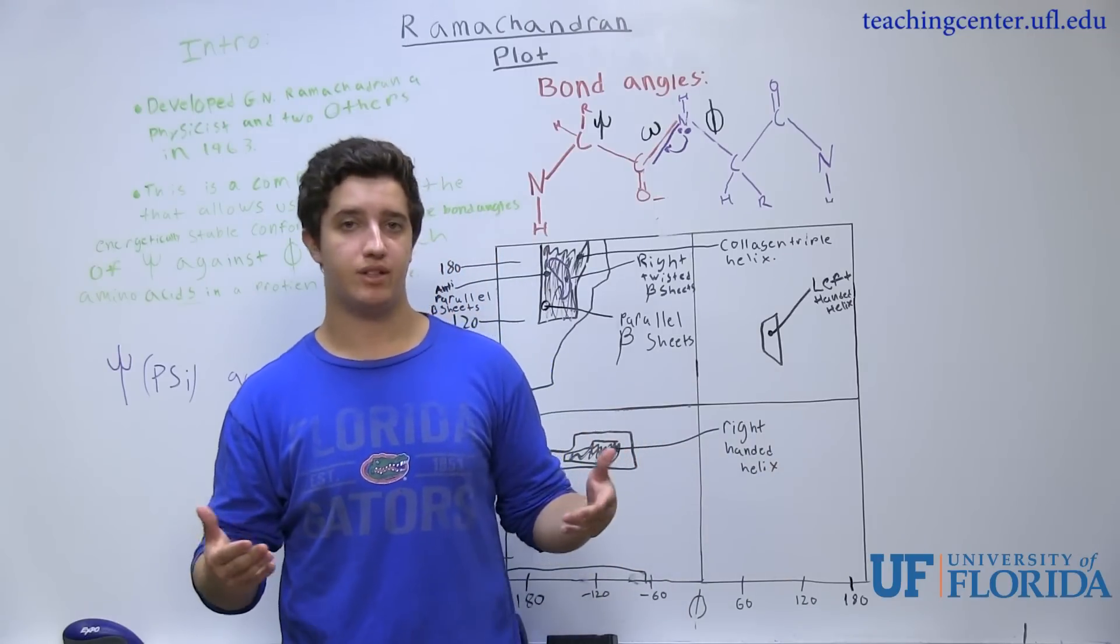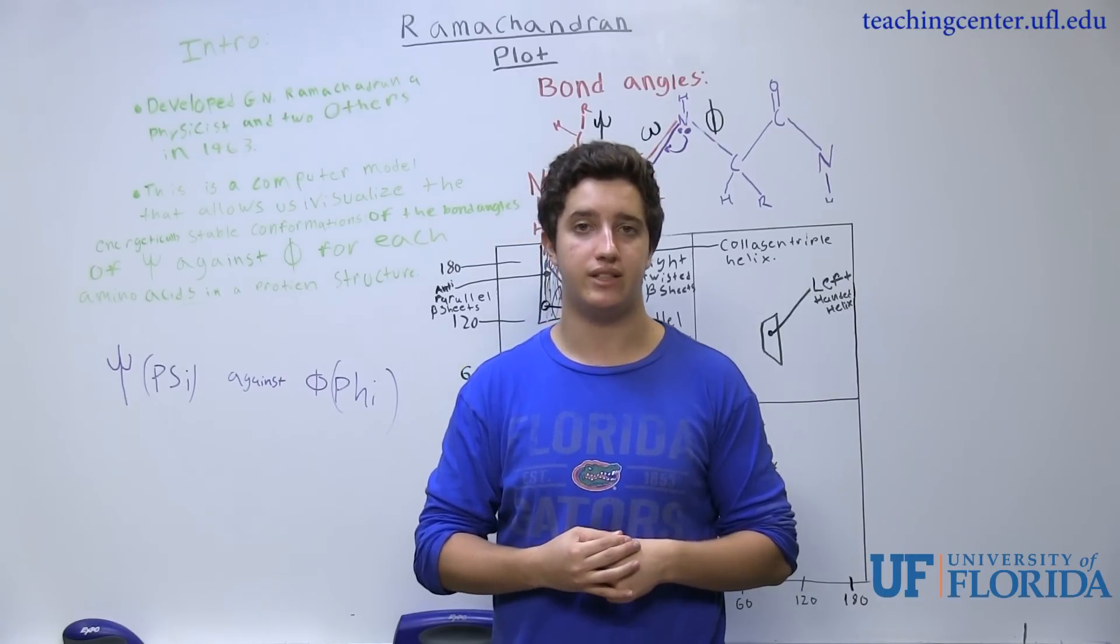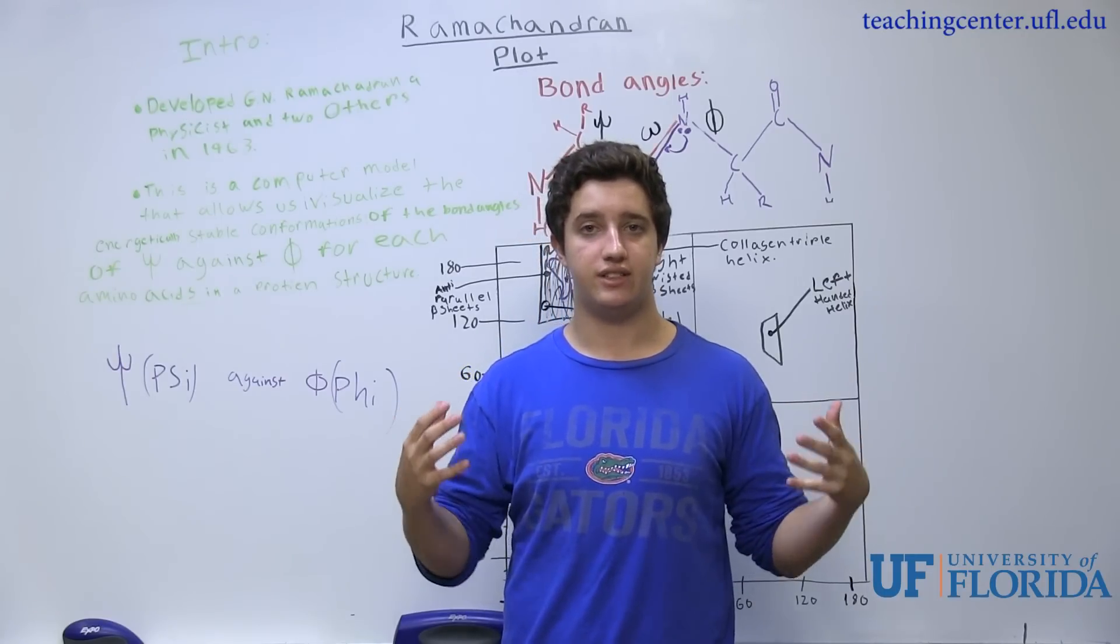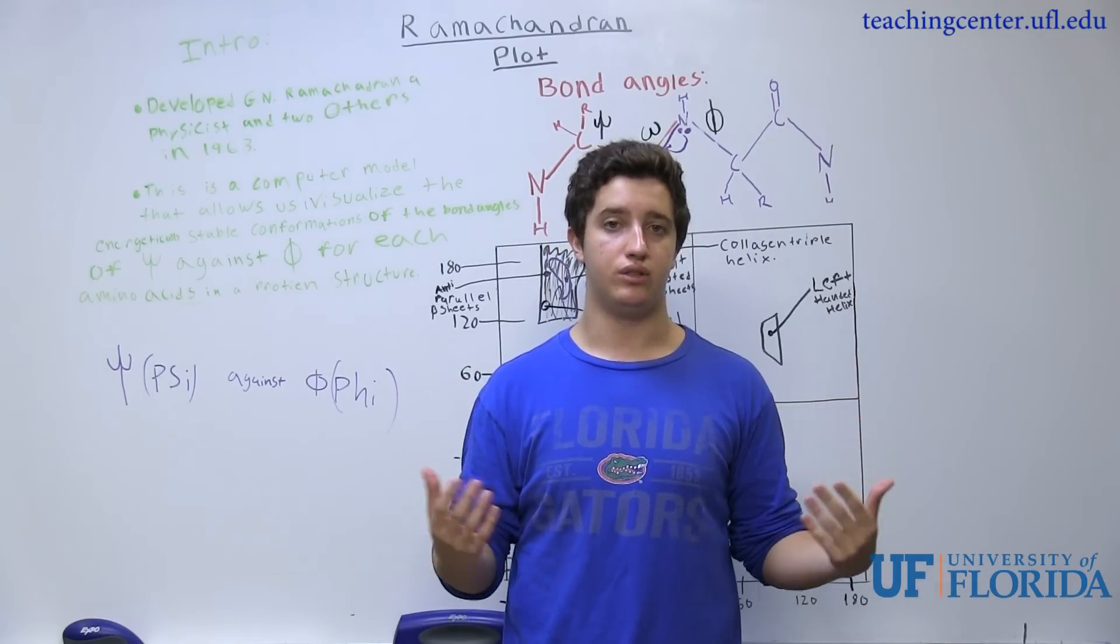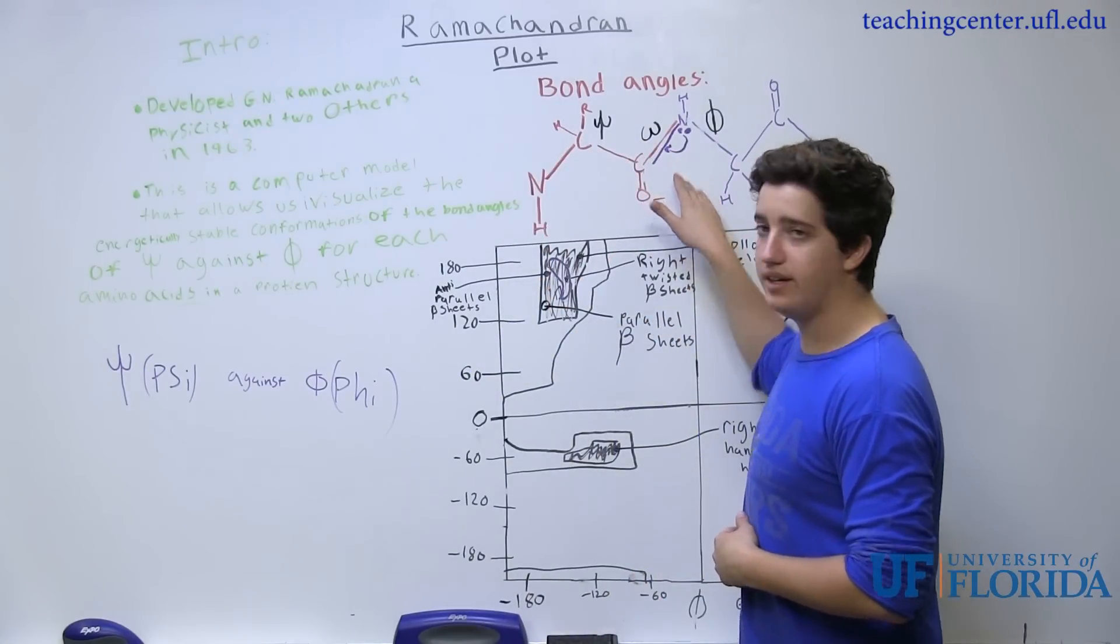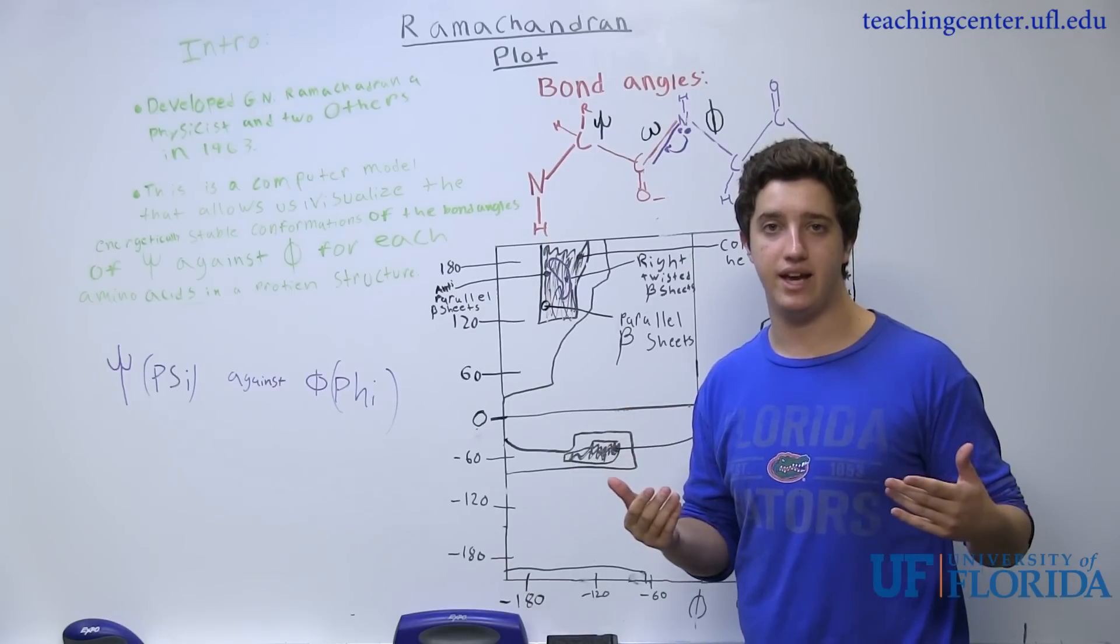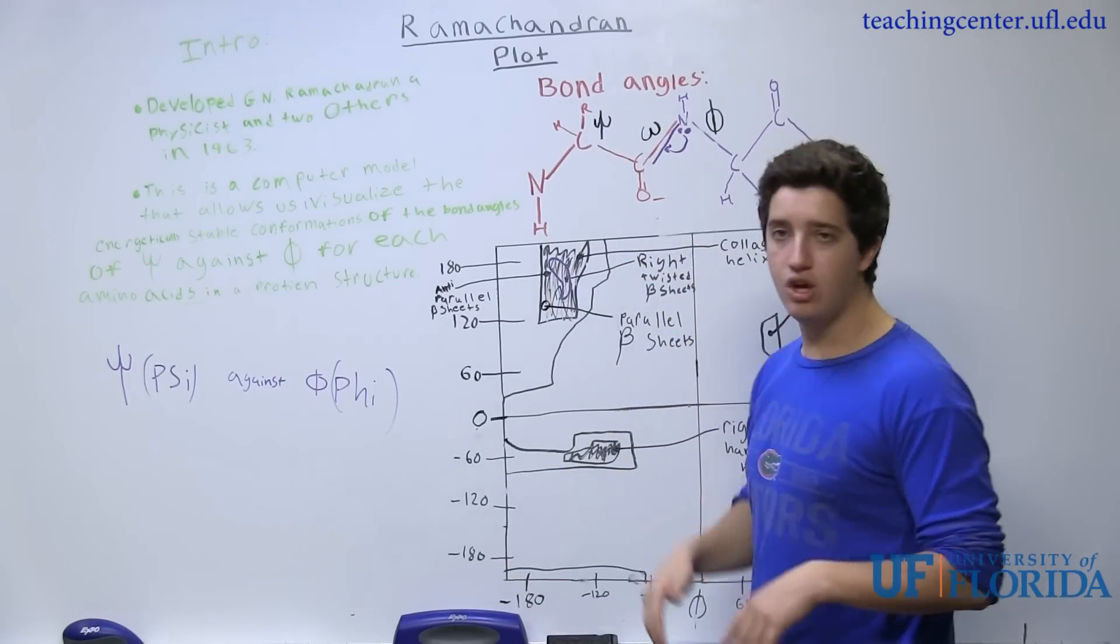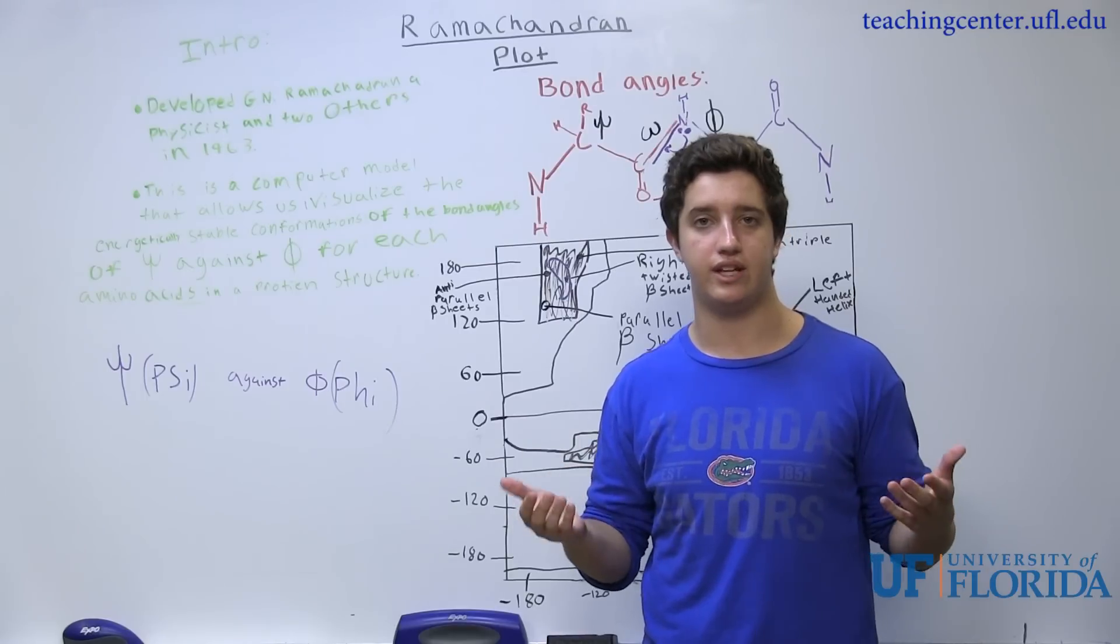So just to review, G.N. Ramachandran came up with the Ramachandran plot as a way to visualize energetically stable conformations of the amino acid residues in a protein structure. The omega bond is going to have partial double bond characteristics and will be free to rotate as much as the psi-phi angles, which will give the proteins the unique structures they all have.